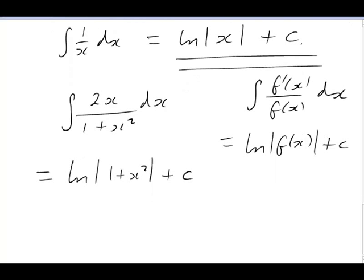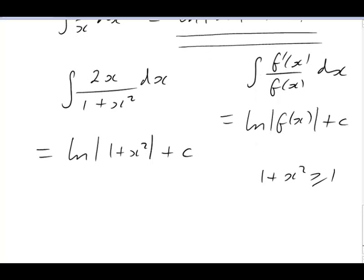However, with 1 plus x squared, there's no question about the sign. It's never negative. 1 plus x squared is a positive quantity. In fact, it's greater than or equal to 1. So that means we can here remove the absolute value and just write log of 1 plus x squared plus c without having to worry.